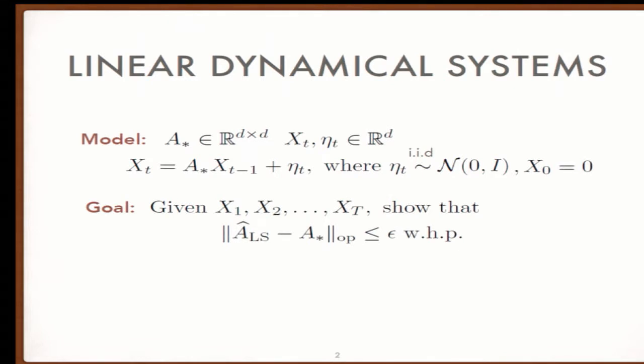The goal is to show that the least squares estimator of A star, by regressing the feature covariates to the previous ones, is close to the ground truth in the operator norm with high probability.